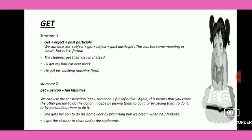Structure two for 'get': we can also use the construction get plus someone plus full infinitive. Full infinitive means infinitive with 'to'. Again, this means that you cause the other person to do the action — maybe by paying them, asking them, or persuading them. For example: 'She gets her son to do his homework by promising him ice cream when he has finished.' And: 'I got the cleaner to clean under the cupboards.'